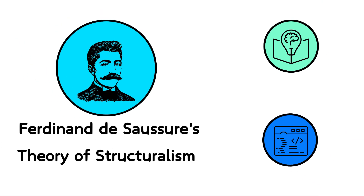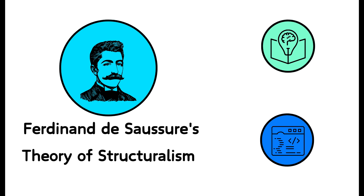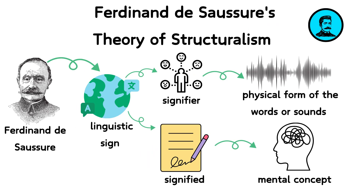Ferdinand de Saussure's Theory of Structuralism. Ferdinand de Saussure, a Swiss linguist, laid the foundational stones for modern linguistics and semiotics with his theory of structuralism. He introduced the concept of the linguistic sign, which is composed of two parts: the signifier and the signified.